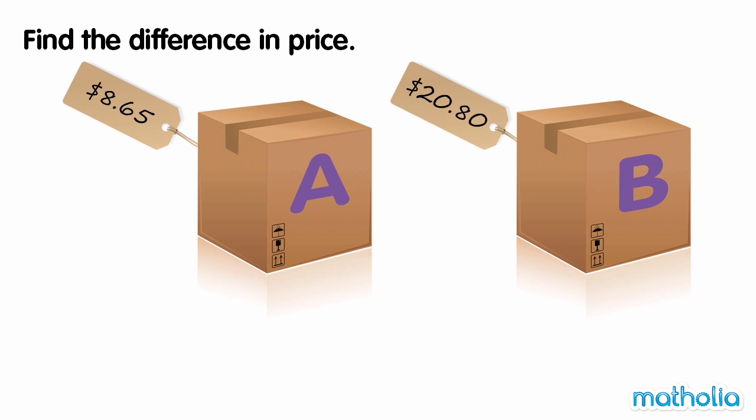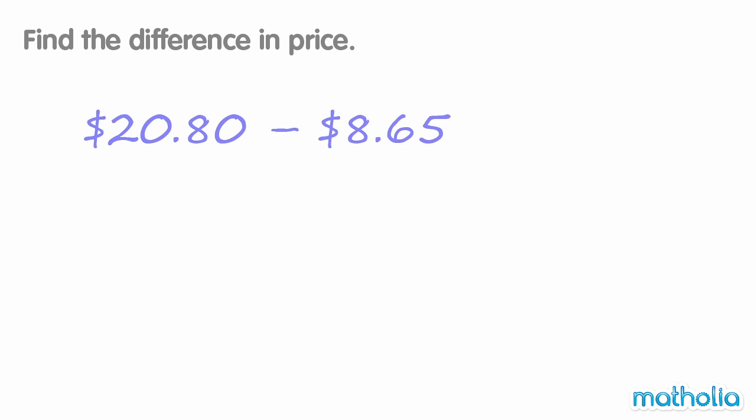Find the difference in price. Box A costs $8.65. Box B costs $20.80. To find the difference in price, we need to subtract. Start by separating the amounts into dollars and cents.